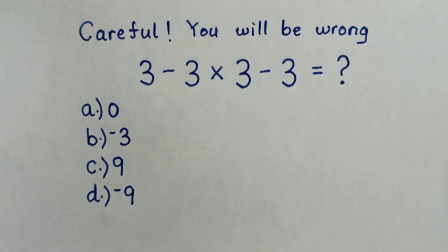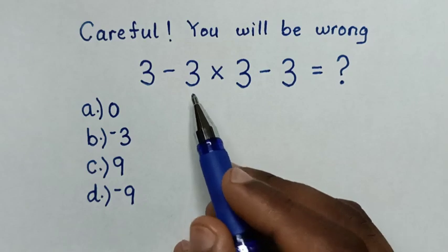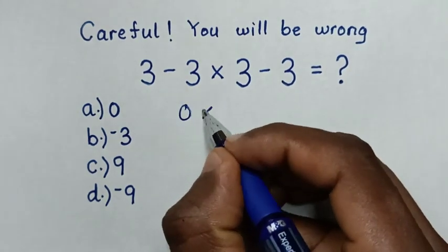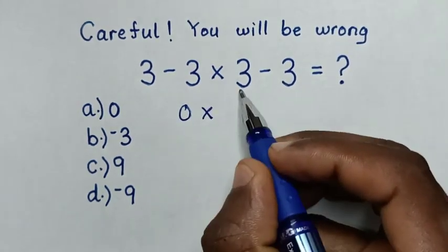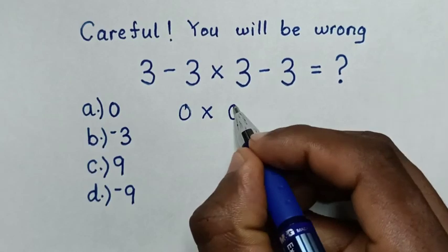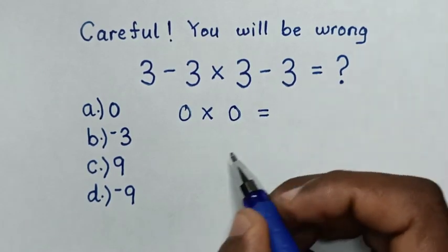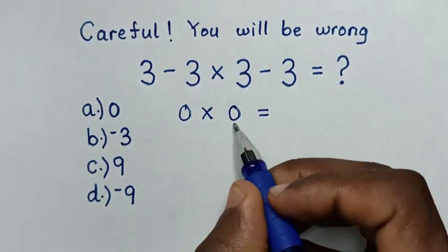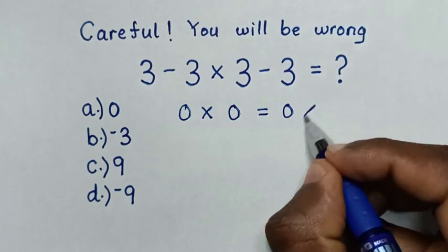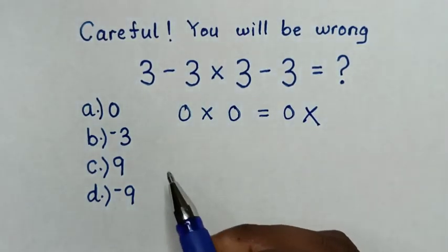If you solve 3 minus 3 is 0, then times 3 minus 3 is 0, then it will be equal to 0 times 0 is 0. This is wrong.